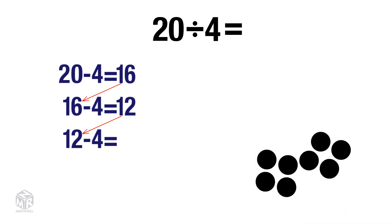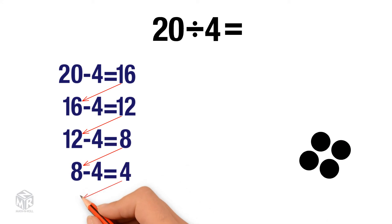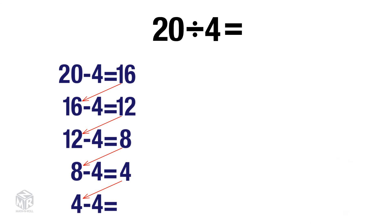12 minus 4 equals 8. There are more than 4 left, so we subtract 4 again. 8 minus 4 equals 4. We have 4 left and we subtract 4 one last time. 4 minus 4 equals 0.